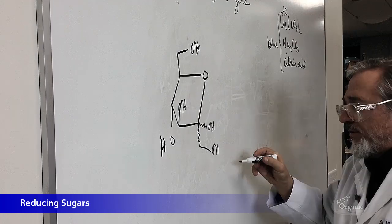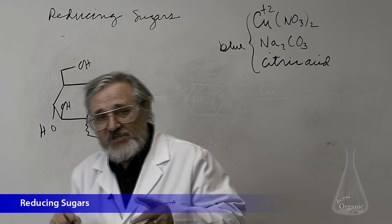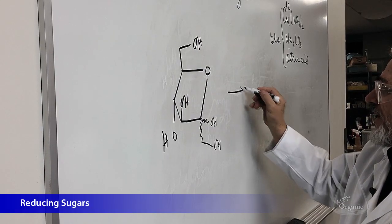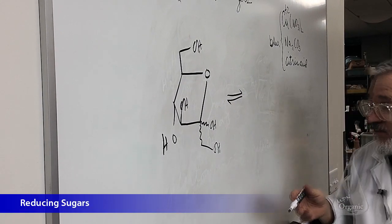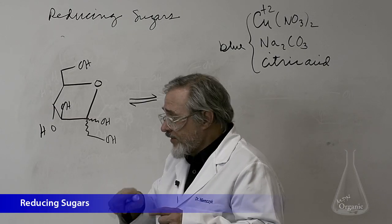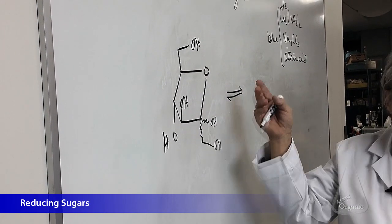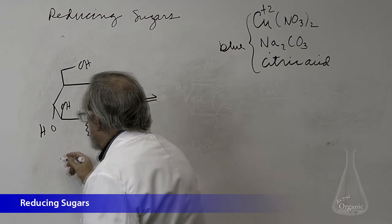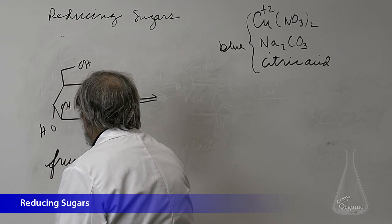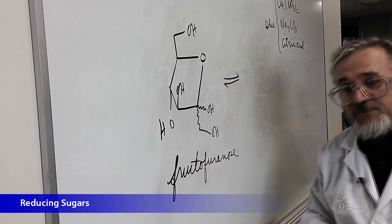So this squiggly line that I draw here is the carbon-oxygen double bond of fructose. And just like with glucose and galactose, the fructose, which form these ring systems, fructose does the same thing, except that it forms a five-membered ring, which we call a furanose. And so we call this fructofuranose.